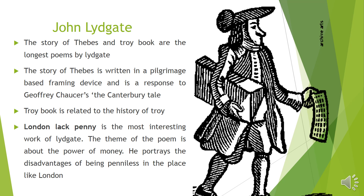Moving to the next poet — John Lydgate. The very first works are the Story of Thebes and the Troy Book, among his longest poems. The Story of Thebes is written using a pilgrimage-based framing device and is a response to Geoffrey Chaucer's Canterbury Tales. The Troy Book is related to the history of Troy and deals with the end of the Trojan War.